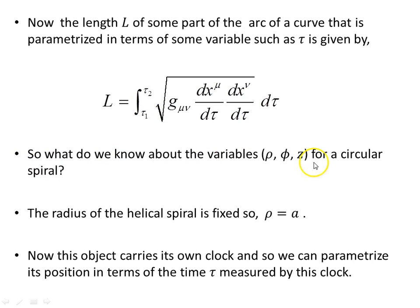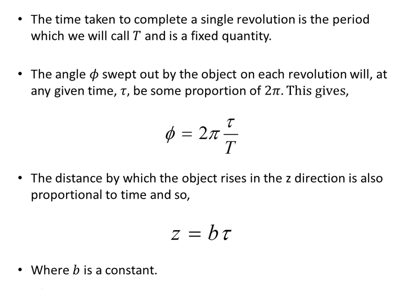So what do we know about the variables rho, phi, and z for a circular spiral, or circular helix I should say. The radius of the helical spiral is fixed, so in this case rho is equal to A, so rho, the radius is constant. Now one other thing we'll do is we'll say that this object carries its own clock, and so we can parametrize this position in terms of the time tau measured by this clock. So this object's traveling a circular spiral helix, and it carries its own clock with it. We'll say the time taken to complete a single revolution is the period, which we will call capital T, and is a fixed quantity given that the radius is fixed.